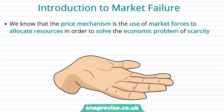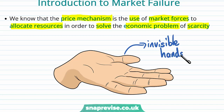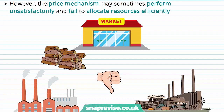To start off our discussion of market failure, we're going to think about what makes a market work. We know that the price mechanism is the underpinning of a market, where the use of market forces allocates resources in order to solve the economic problem of scarcity. It's this omnipotent invisible hand that Adam Smith posited, where market forces lead to the most efficient allocation of resources possible, done through the price mechanism sending out signals and economic agents adjusting their behavior accordingly.